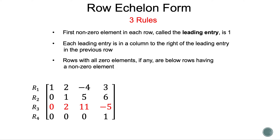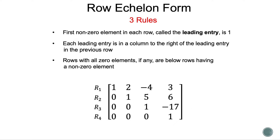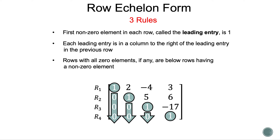Let's rewrite our matrix to have more room. We need to look at the element 2 in row 3 beneath the 1 in row 2 — we need that 2 to be a 0. To do that, we use row 3 minus 2 times row 2. The 2 becomes a 0 and our new row 3 is 0, 0, 1, and negative 17. We have transformed this matrix into row echelon form. The principal diagonal is full of 1's, which follows rules 1 and 2. Since we don't have a row full of 0's, we don't have to worry about rule 3.